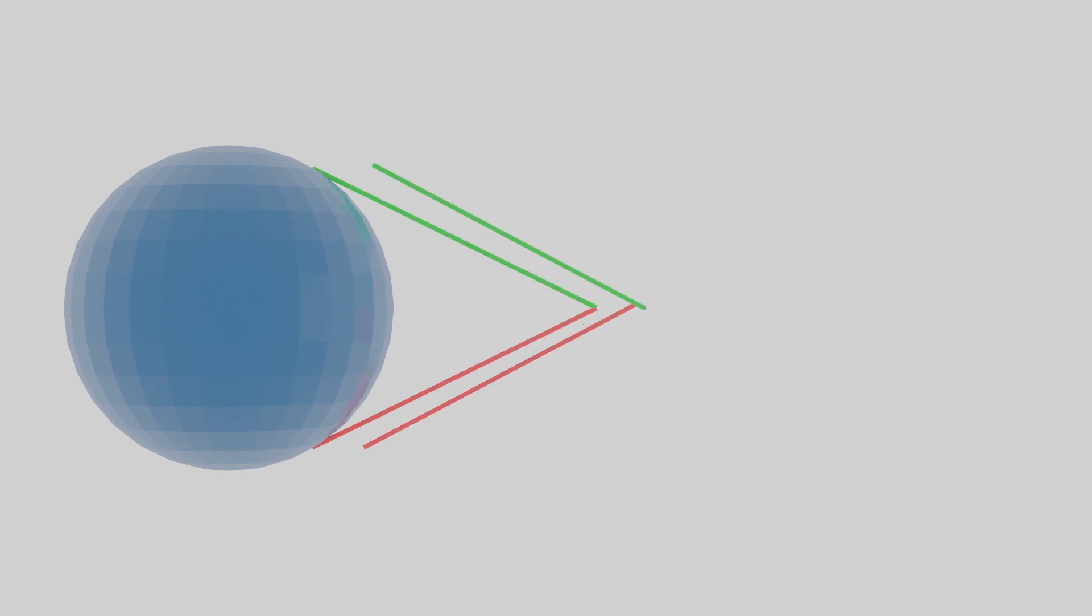Secondly, if we look at a sphere, and we look at lines tangent to that sphere, if these lines intersect at some point, then we know that the length of these line segments must be exactly equal. The proof of this is simple enough and is left as an exercise to you.